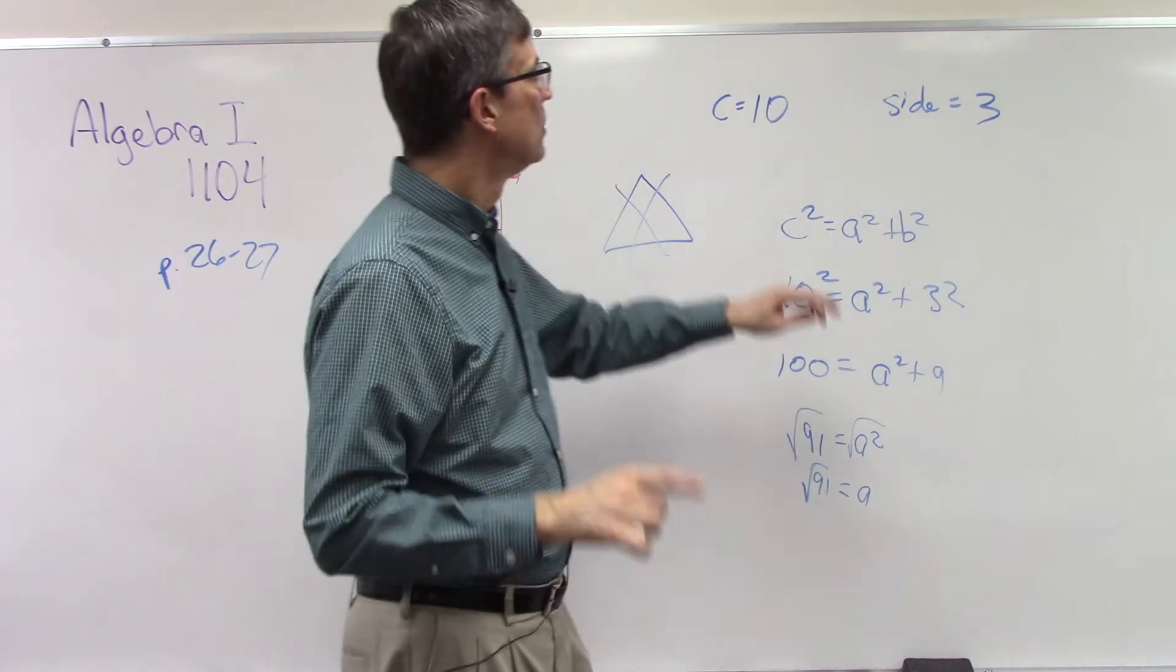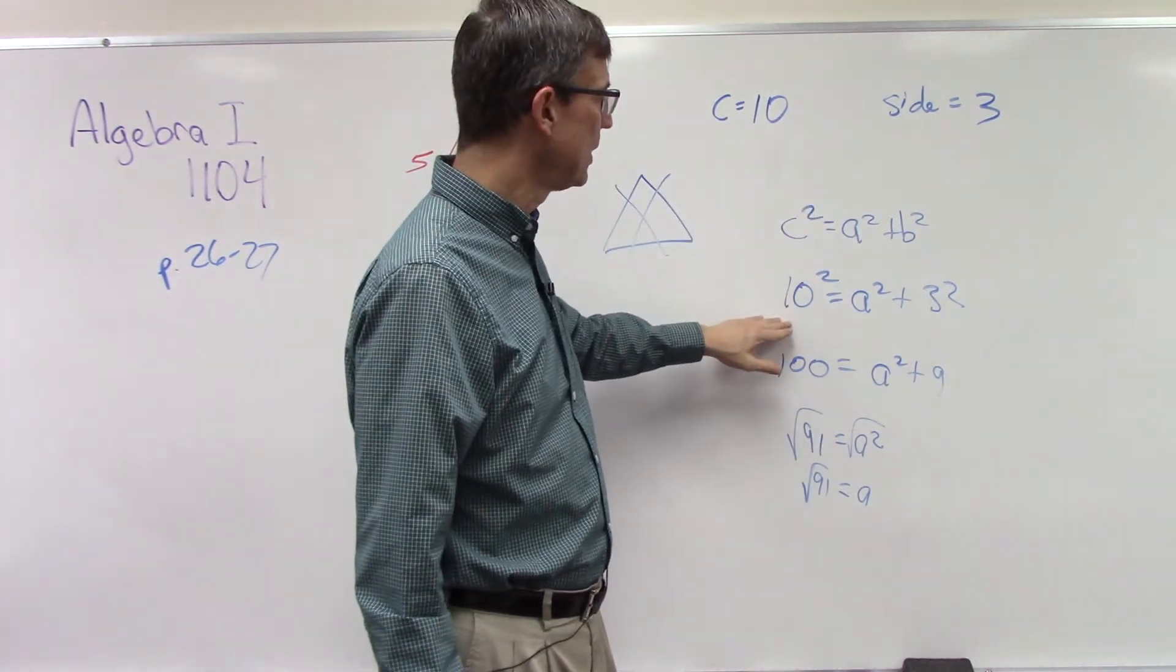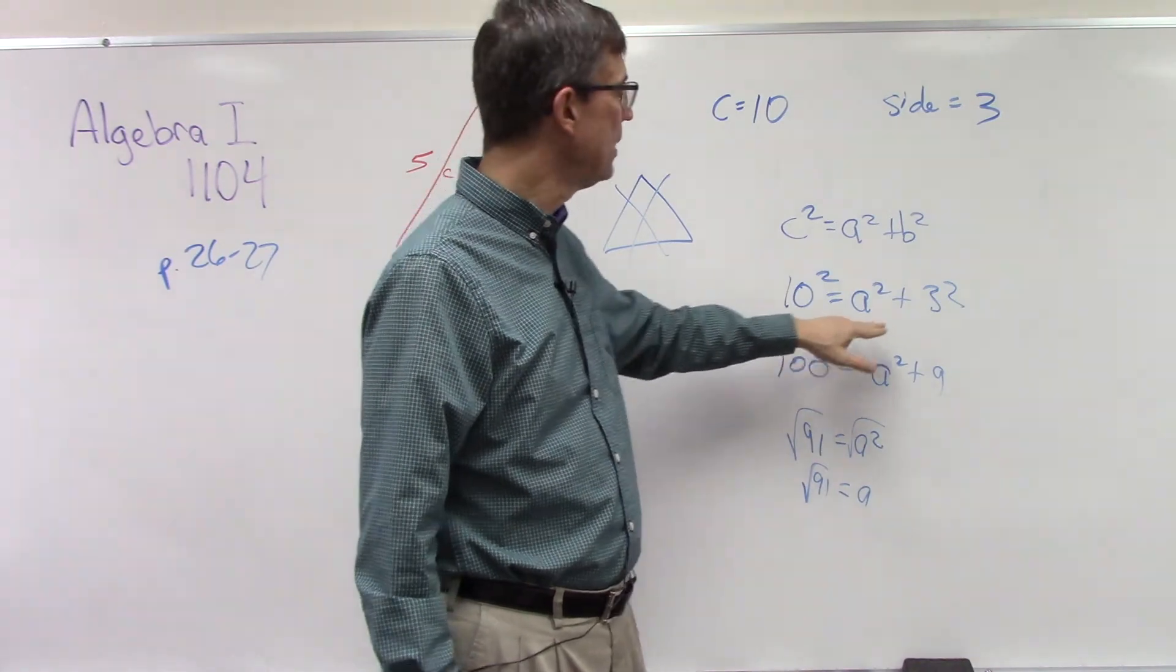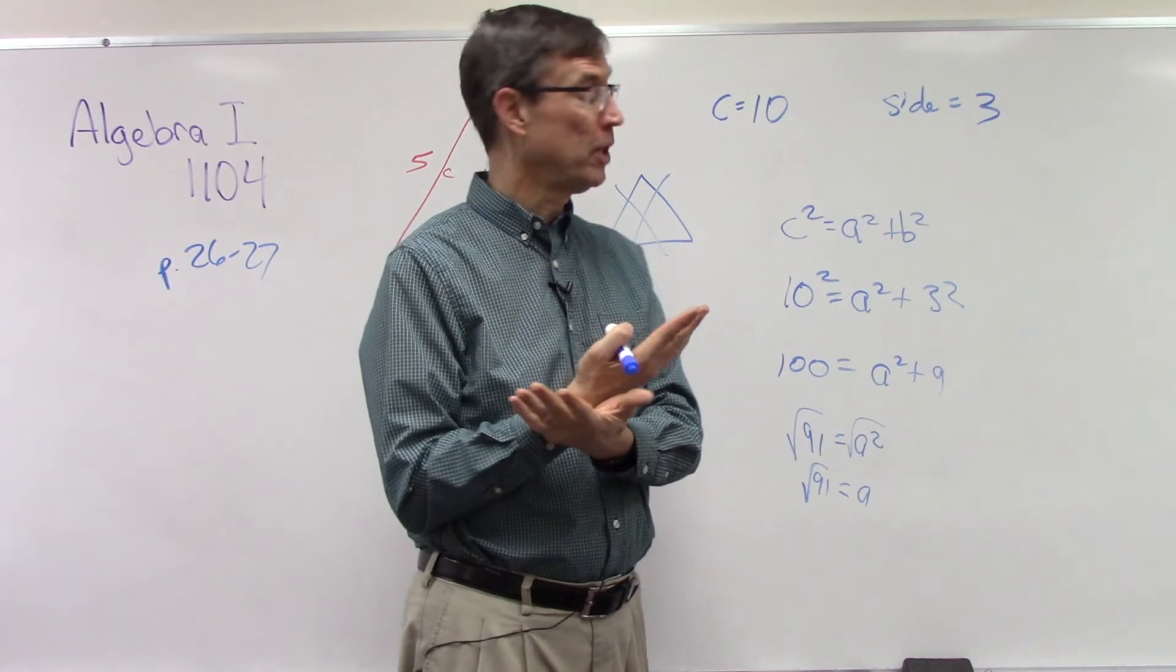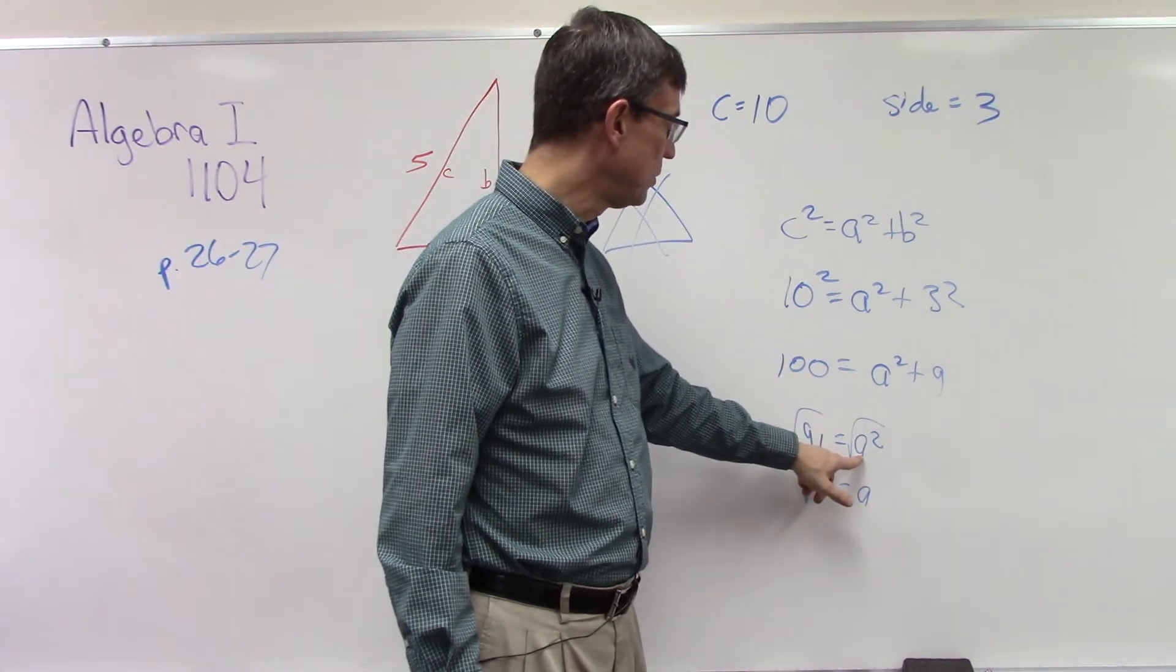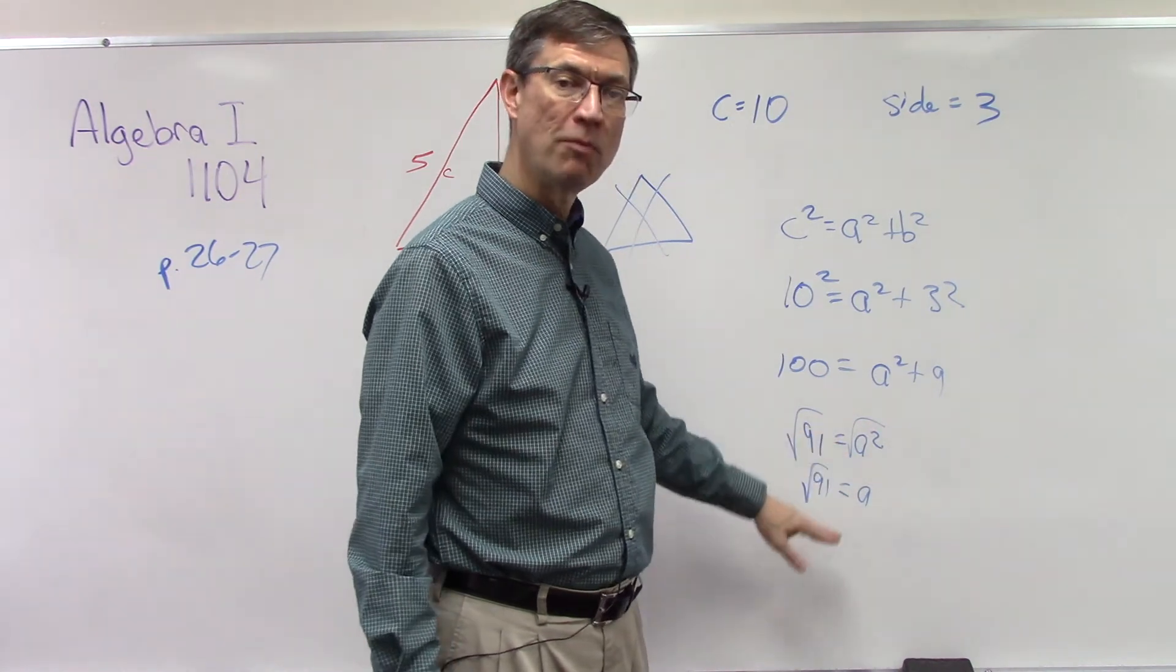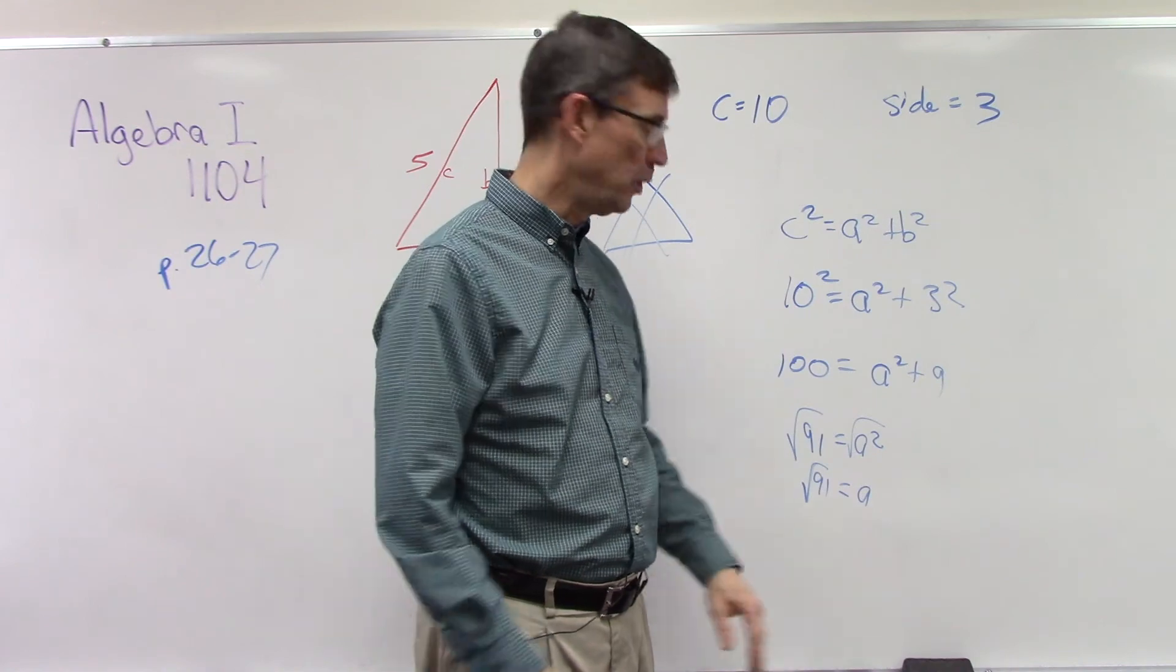So they only have a couple problems on this lesson that will have you actually solving some, but the key is to notice if it tells you what the hypotenuse is, you have to plug it in for C. If they tell you the two legs, you can plug it in for A and B, and it does not matter which order. And then when you get to the last step, you're almost always going to have to - in fact, you will have to - do the square root of both sides in order to isolate and solve for that letter, that variable.